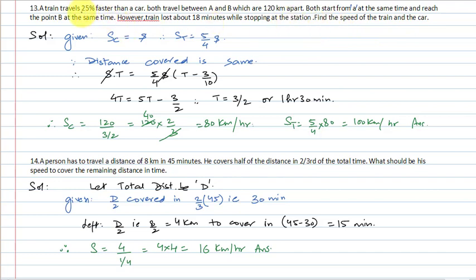So the train's speed is 25% faster than the car's speed. Both are moving from point A towards B and take the same time. The time is the same because even though the train's speed is greater, it stops at stations for 18 minutes. So the train's actual running time is the total time minus 18 minutes.